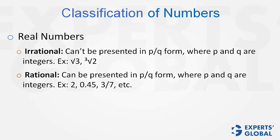Rational numbers are the numbers that can be represented in p by q form, where p and q are integers. Examples are 2, 0.45, 3 by 7, negative 2.